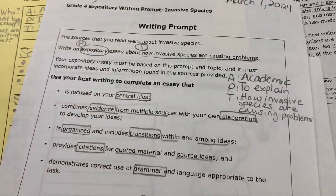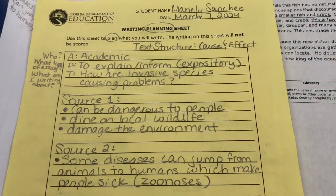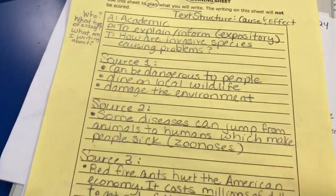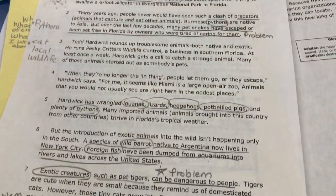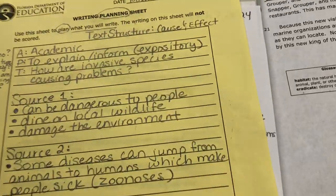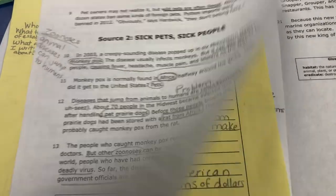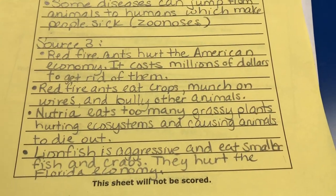With my advanced group, we spent the entire block on writing. I introduced the planning sheet and how to use it, and we analyzed the prompt together — writing it down so they can always think about it as they write. Then we started reading the sources. We re-read source one and wrote the three problems caused by invasive species, read source two and noted its problem, then read source three about the red fire ant, the nutria, and the lionfish, noting the problems each causes.